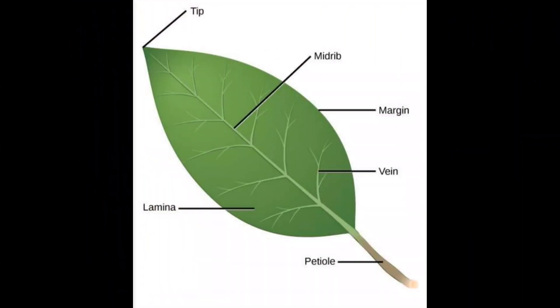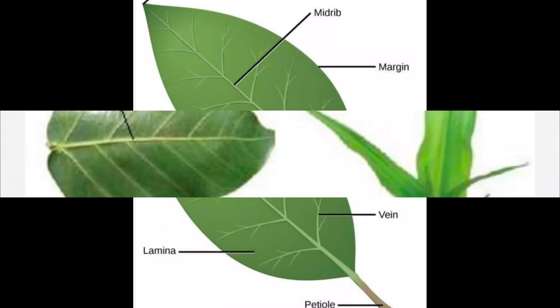Our next important diagram is from Chapter 7: Getting to Know Plants. This is a new chapter for your half-yearly syllabus, so you have to give much more emphasis on this chapter and the very next chapter, Chapter 8. From Chapter 7, you have to practice the diagram along with the labellings of a leaf.